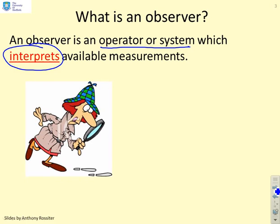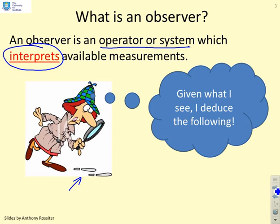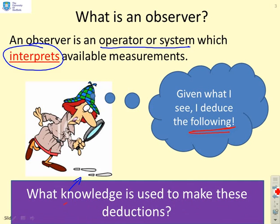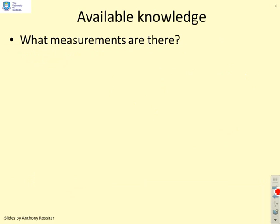Here's an example. An inspector can see some measurements — some footprints. Their job is to say: given what I can see, what am I able to deduce? They can't actually see the state x directly; they can see an alternative measurement, and from that measurement they want to deduce something about the state. The question is: what extra knowledge are they going to use in order to make their deductions?